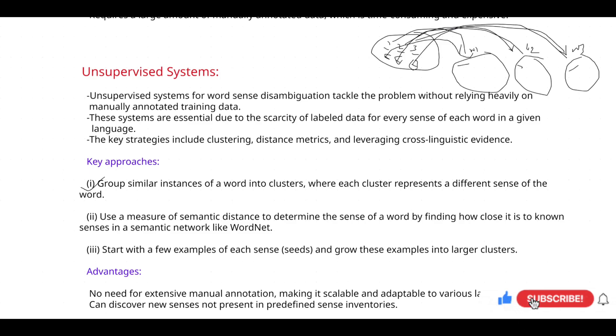And the second approach is to use a measure of semantic distance to determine the sense of a word by finding how close it is to known senses in a semantic network like WordNet. About WordNet, we will discuss in further videos, but let's understand what this sentence is saying. Take word one and take word two, and you have to determine the distance between them. I mean, distance doesn't mean you have to find how far this word is from this word - it doesn't mean that kind of distance.